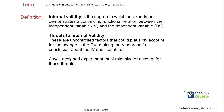Quick refresher: internal validity is the degree to which an experiment demonstrates a convincing functional relation between the IV and the DV. In other words, does our independent variable control that dependent variable? Is there a relationship that we can begin to prove? Because we want to know that we are controlling the behavior and there's not something else going on.